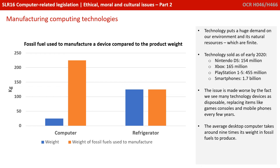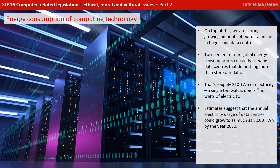The average desktop computer takes around nine times its weight in fossil fuels to produce, whereas something like a refrigerator is about the same weight — making this incredibly wasteful. On top of this, we're storing growing amounts of data online in huge cloud data centres. Currently, 2% of our global energy consumption is used by data centres that do nothing more than store our digital information — that's roughly 210 terawatts of electricity.